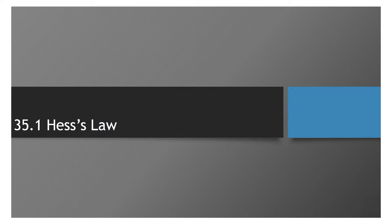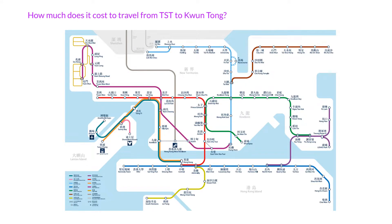In this video, we're going to talk about Hess's Law. Before we go to Hess's Law, I just want to ask: if you need to travel from Tsim Sha Tsui to Kwun Tong, how much does it cost by MTR? Right now you're at Tsim Sha Tsui, and the fastest way is to go through the red line and then the green line all the way to Kwun Tong. Say for example it will just cost you nine dollars for that distance.